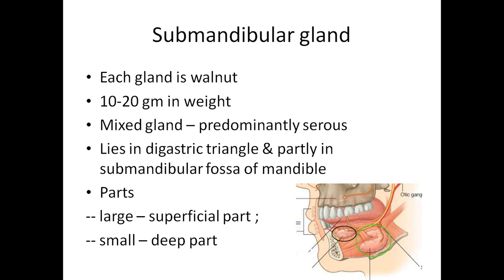The submandibular salivary gland is shaped almost like a walnut and weighs approximately 10 to 20 grams. It is a mixed salivary gland: 50 to 55 percent is made up of serous acini and the remaining is mucus acini, with 5 to 10 percent being serous demilunes.